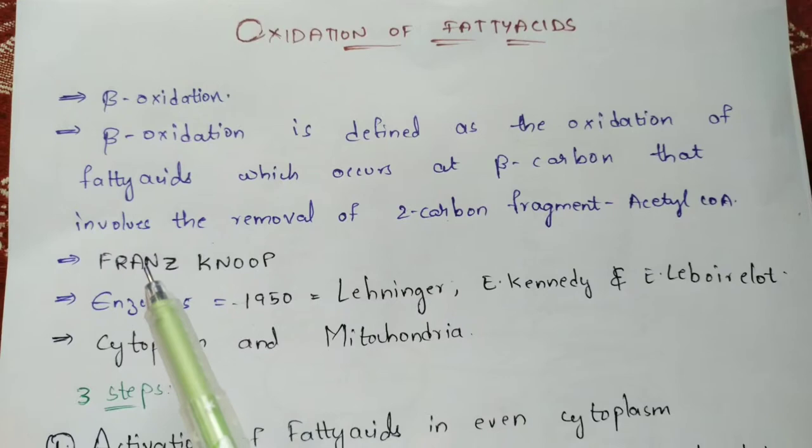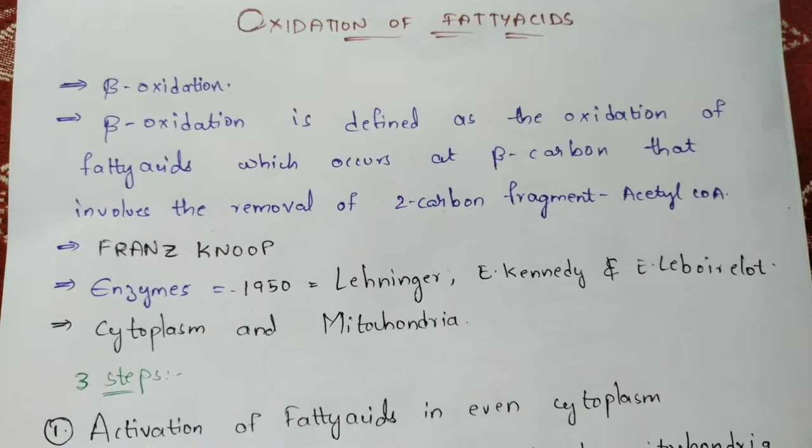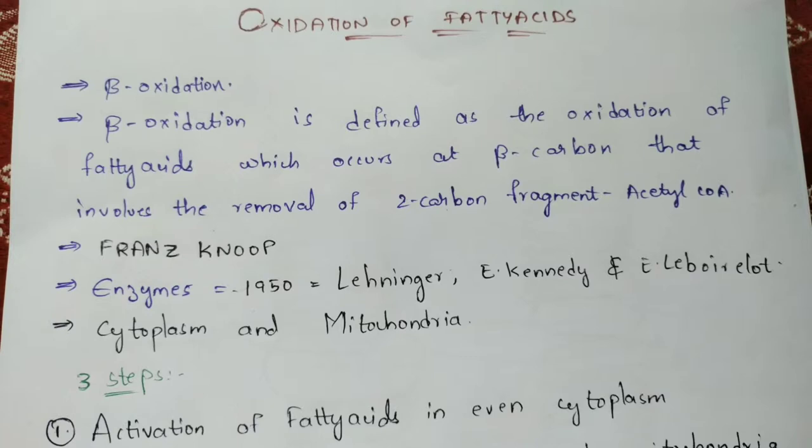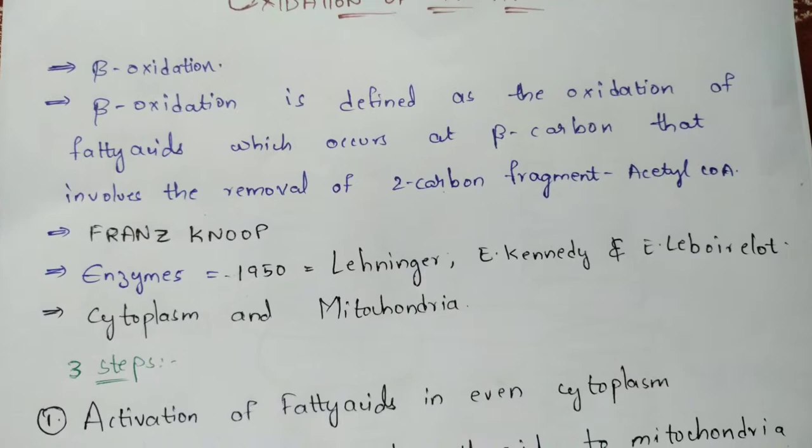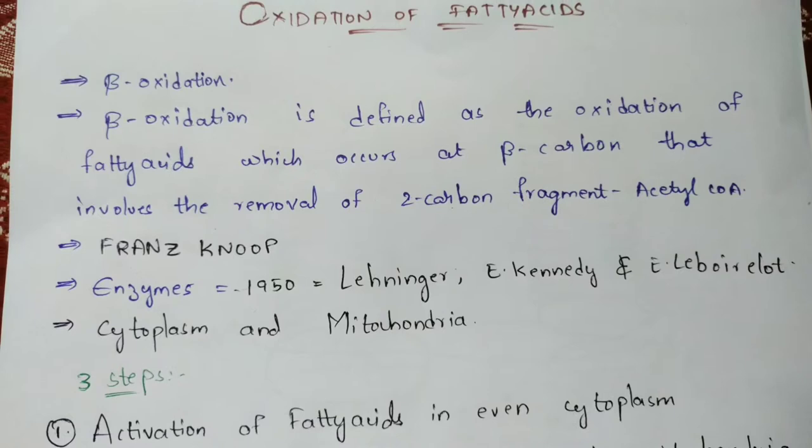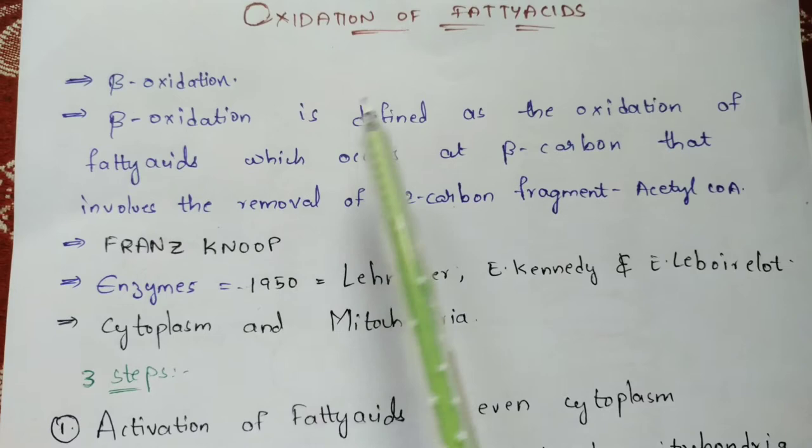The oxidation of fatty acid was discovered by Franz Knoop. What he did was he took a dog, fed it food, and examined the waste material excreted under a microscope. He discovered the oxidation of fatty acids through that waste material.